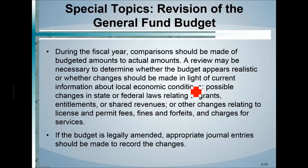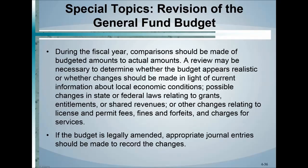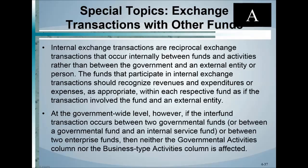For revision of the general fund budget mid-year — perhaps due to extra revenue received — the governing body will pass a supplementary budget. Those changes are recorded as journal entries: the extra revenue received or any extra expenditures not previously budgeted for. These entries go in the general fund only, not government-wide, since that's what budgeting is required for.